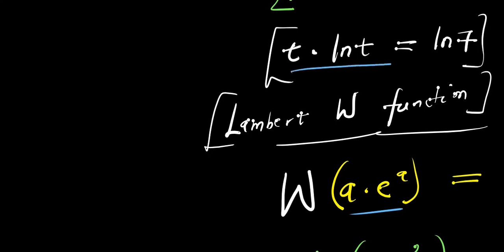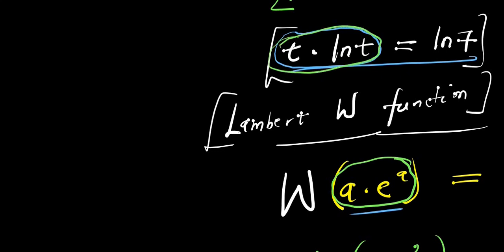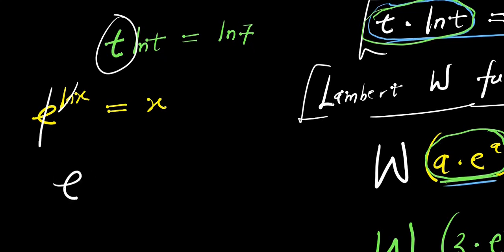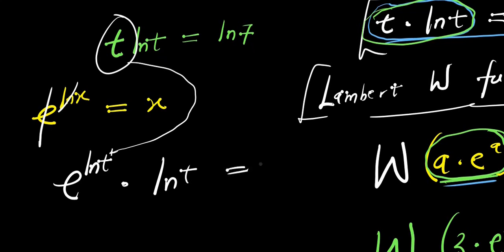Now, look at what we have here. We need to convert this to the required form so that we can apply the Lambert W function. We have t times ln(t) equals ln(7). What we are going to do is some manipulation: if you have e to the power of ln(x), this is the same as writing x, because e can eliminate the ln. So instead of writing t, I can express it as e to the power of ln(t). Then I still have my ln(t), and this equals ln(7).